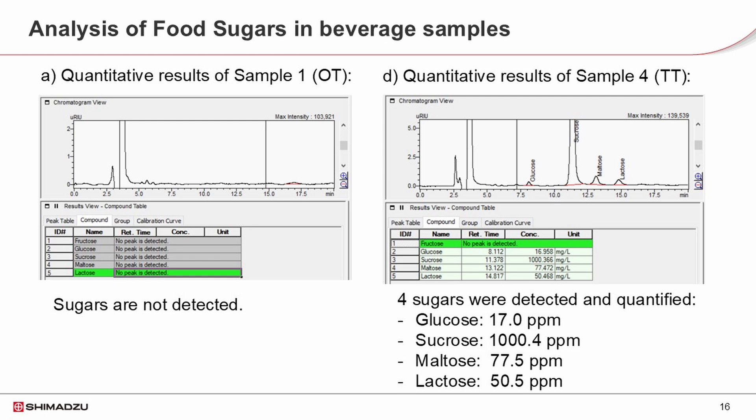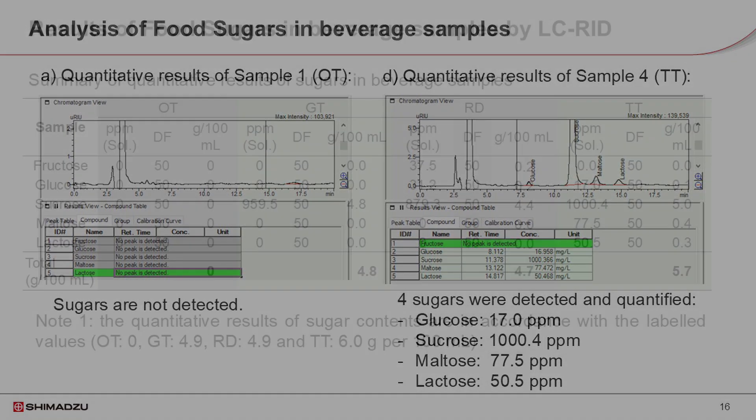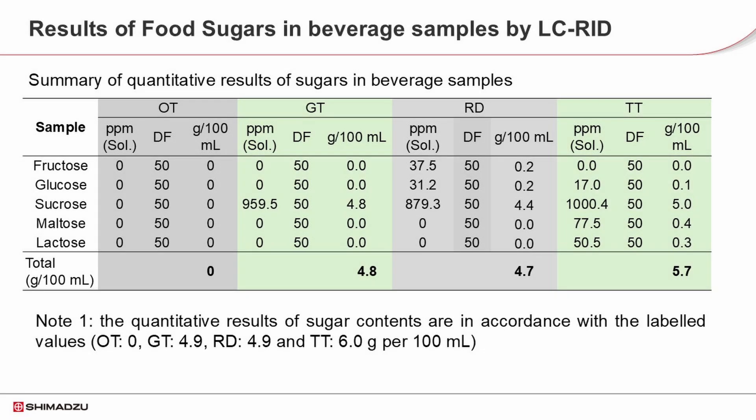However, in sample 4, teh tarik, four sugars were detected and quantified, with 1,000.4 ppm of sucrose as the main sugar in the sample. The individual sugars and total sugar contents are shown in this table. Sucrose is the main sugar in all three beverages. The total sugar contents are essentially in accordance with the labeled values: 0 in oolong tea, 4.8, 4.7, and 5.7 g per 100 ml in green tea, red dates, and teh tarik respectively.